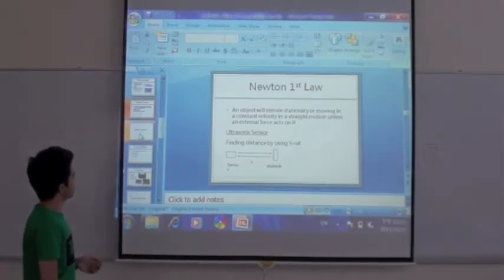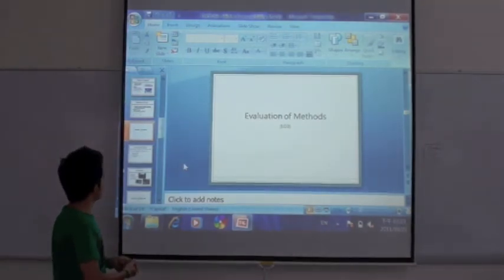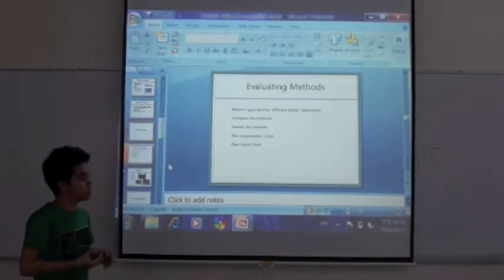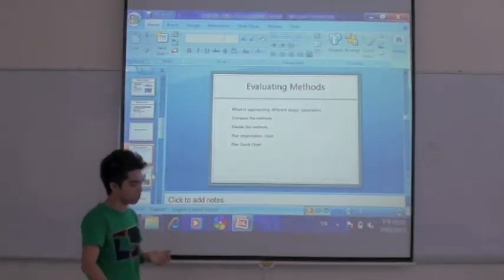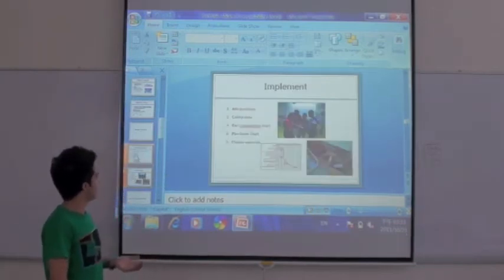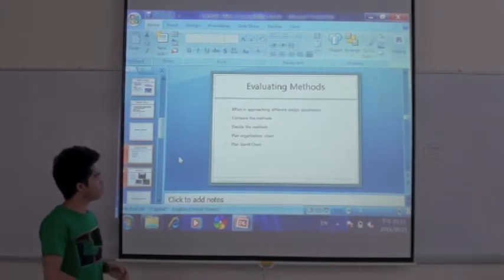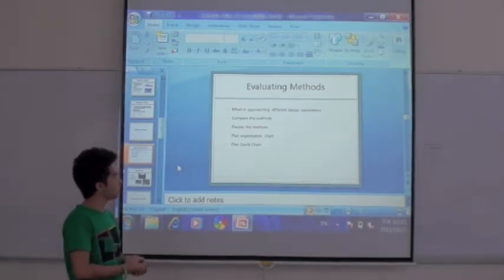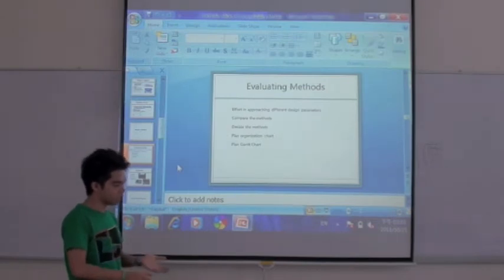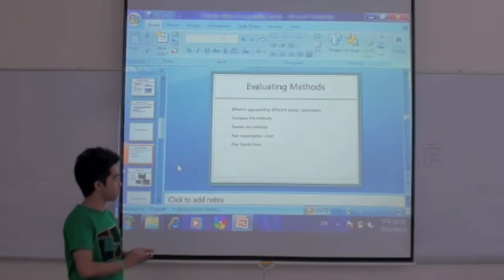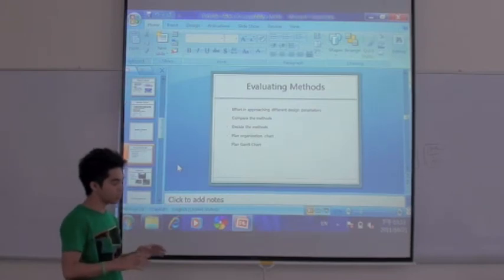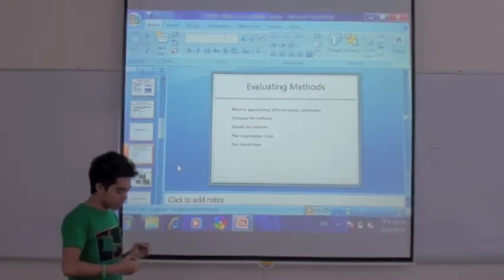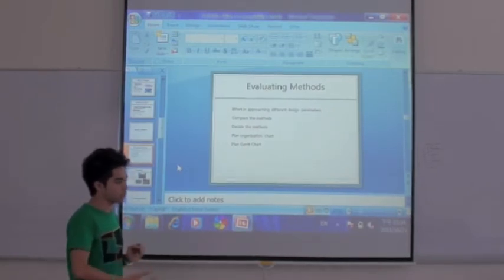Let's move to the next learning outcome, which is evaluation of methods. What do you mean by evaluation of methods? Evaluation of methods means your effort in approaching different kinds of design parameters. When you identify your parameters, you have to compare the methods that you have chosen. Not just that, you have to decide what method is the best from all the methods that you have identified. Not just that, once you have identified everything, you have to plan and organize your chart in your project so that all the tasks are being distributed equally among your members. Lastly, you have to plan a Gantt chart so that the progress of the project is being monitored from time to time.